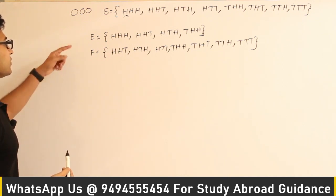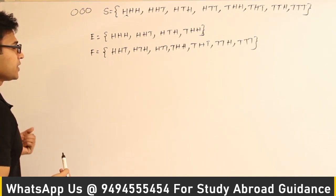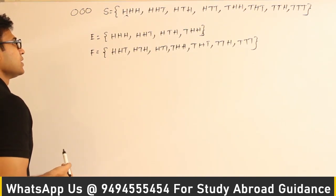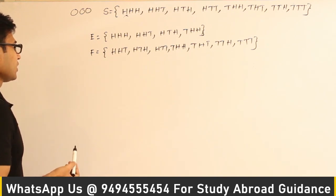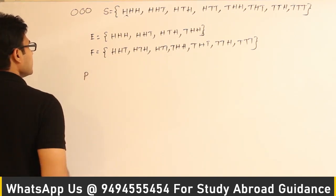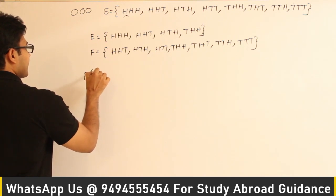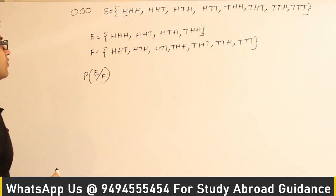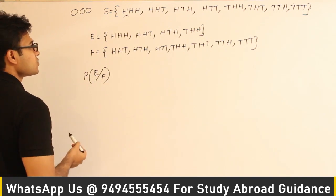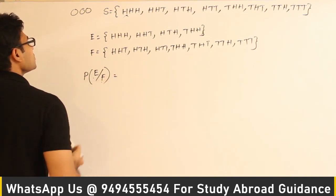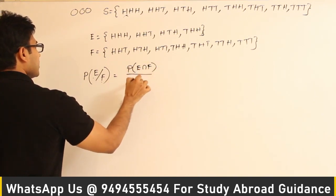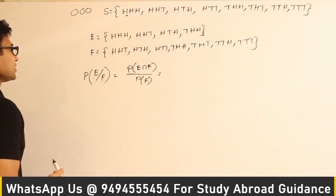So E is the event that at least two coins showed heads, and F is the event that at least one coin showed tails. If it is asked: what is the probability of E given F — meaning, given that at least one coin has turned up tails, what is the probability that two coins showed heads?